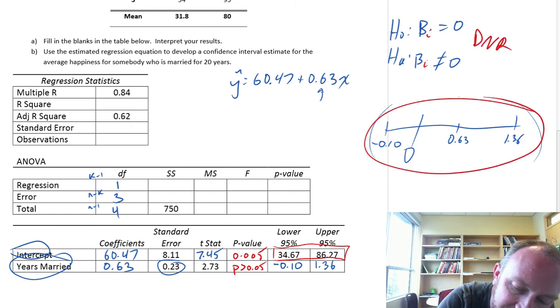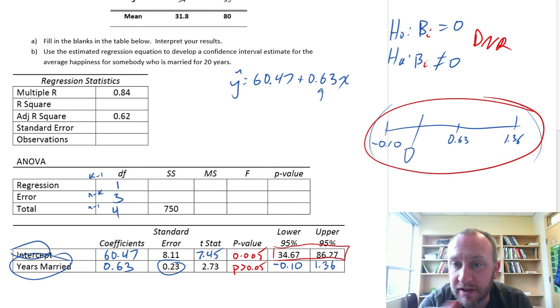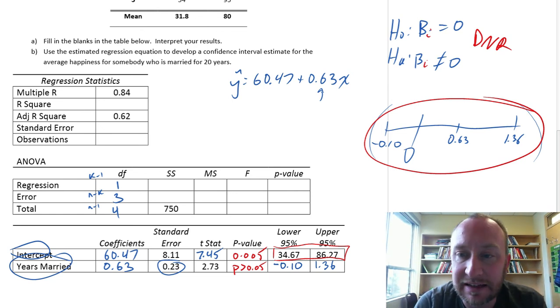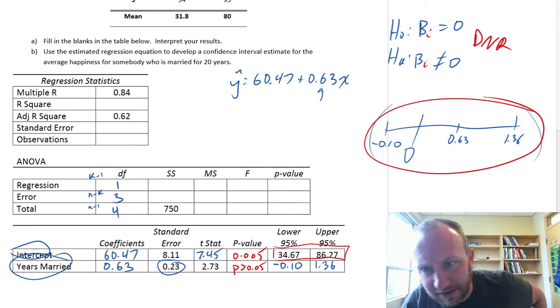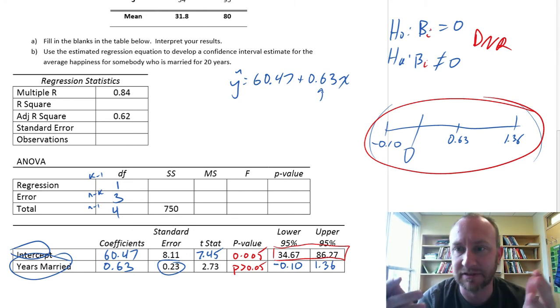And that was consistent with our confidence interval findings. So, years married. In this example, years married is not a predictor of happiness. I don't know what our prior beliefs were, but at least in this example we found that years married is insignificant.